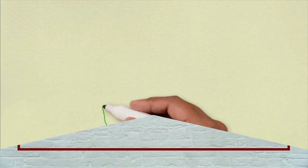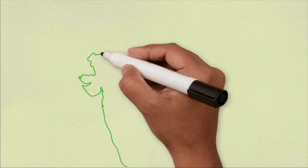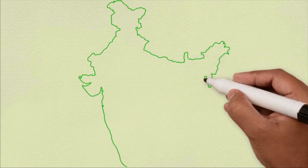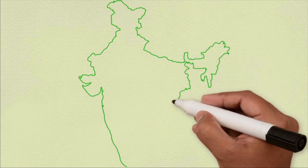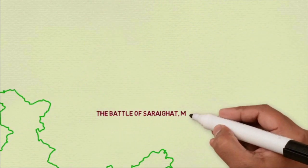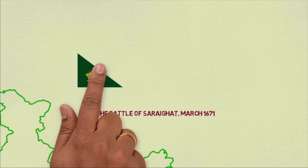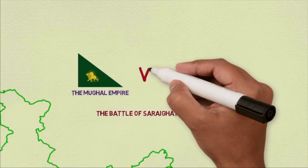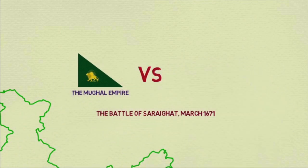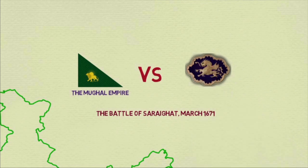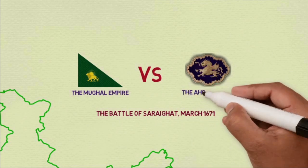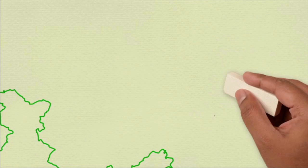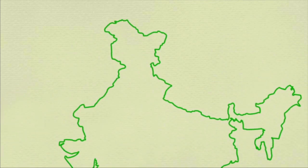Introduction. The full details of the Assamese-Mughal conflict is beyond the scope of this short video. I am only going to talk about the events directly leading up to the battle, followed by the strategies and tactics involved in the battle itself. The Battle of Kharaigat was fought in the year 1671 between the Mughal Empire and the Ahom Kingdom of Assam.